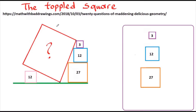Hello everybody. In this video we are going to solve the toppled square problem using two different ways. In the problem we have a big red square leaning on three squares stacked on top of each other, and we are supposed to find the area of the red square.